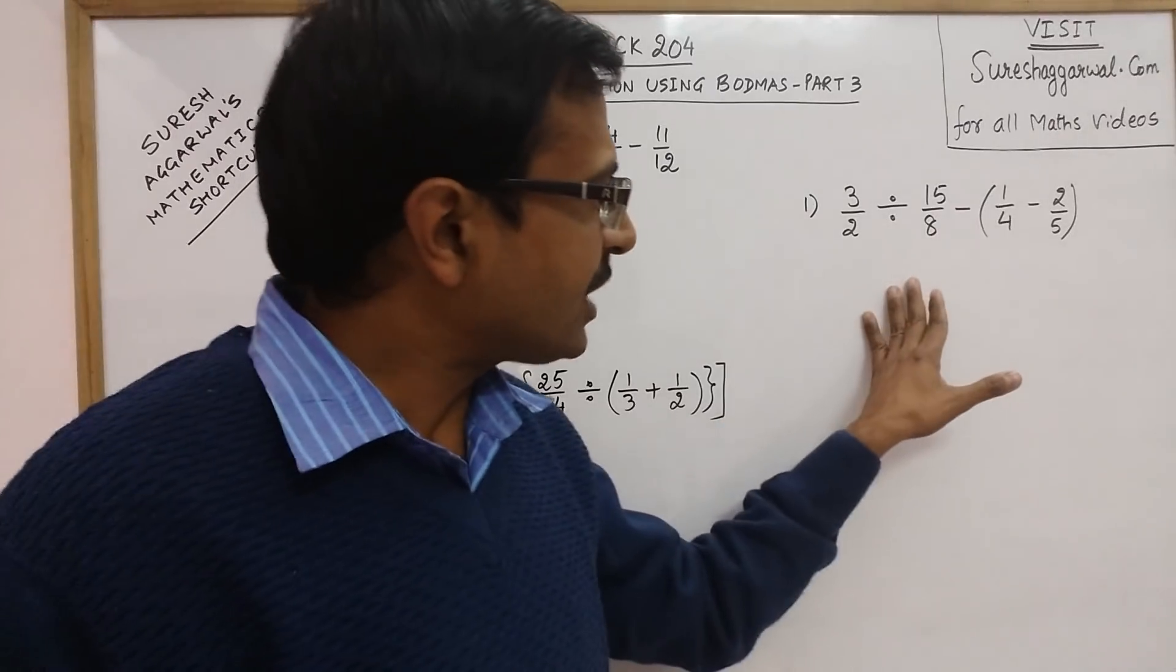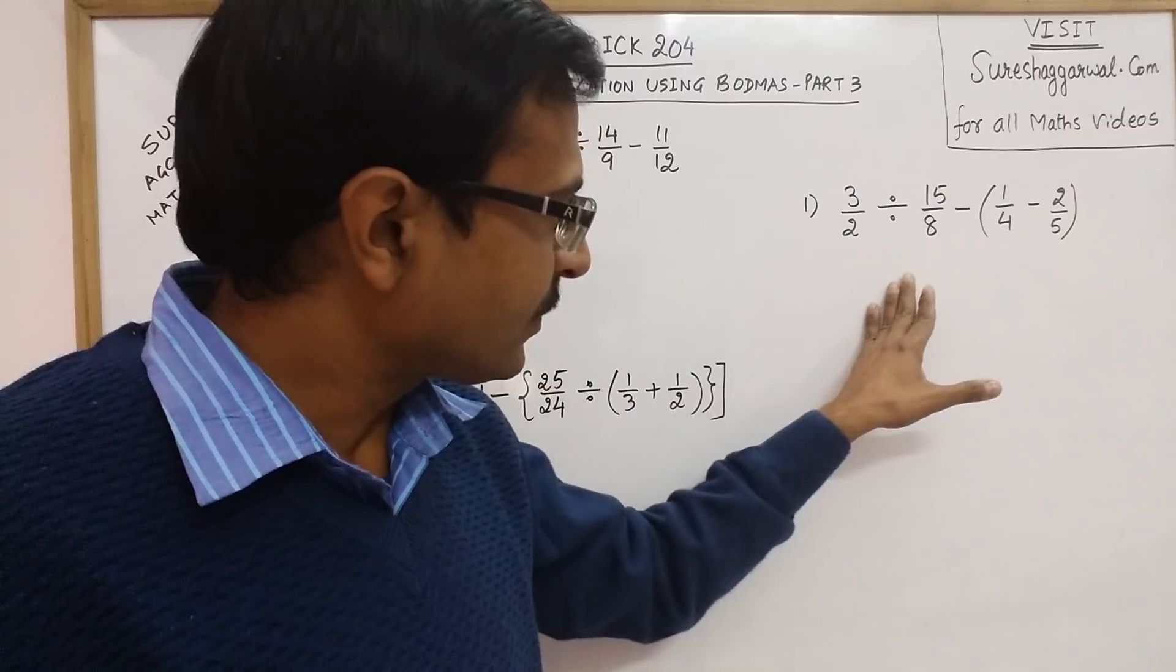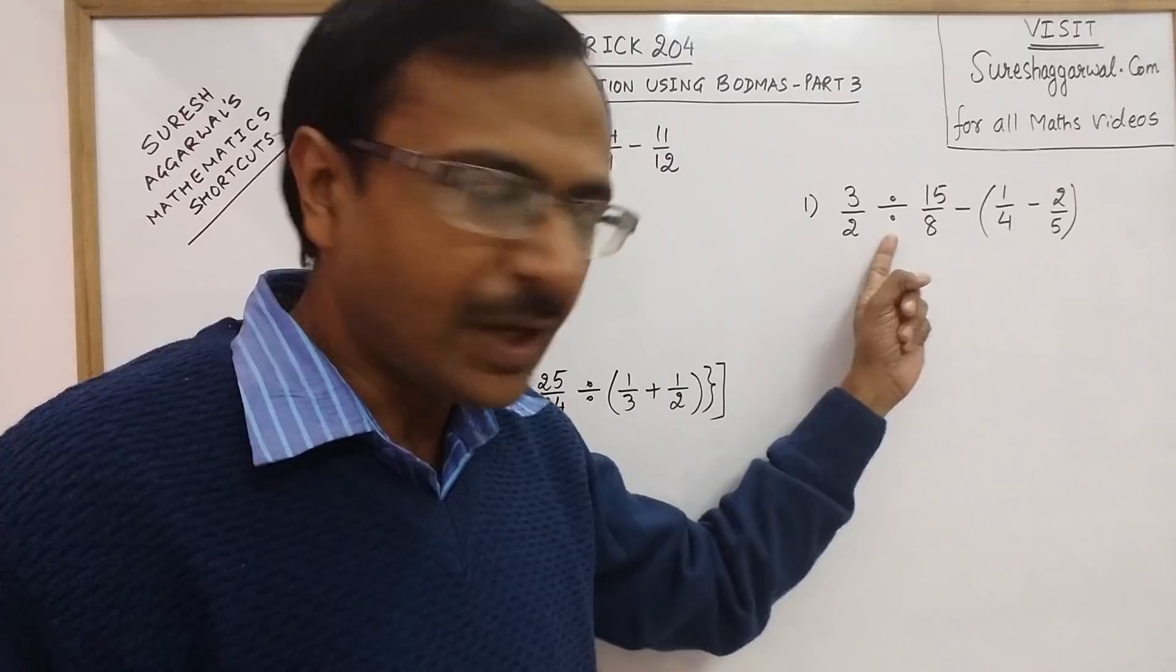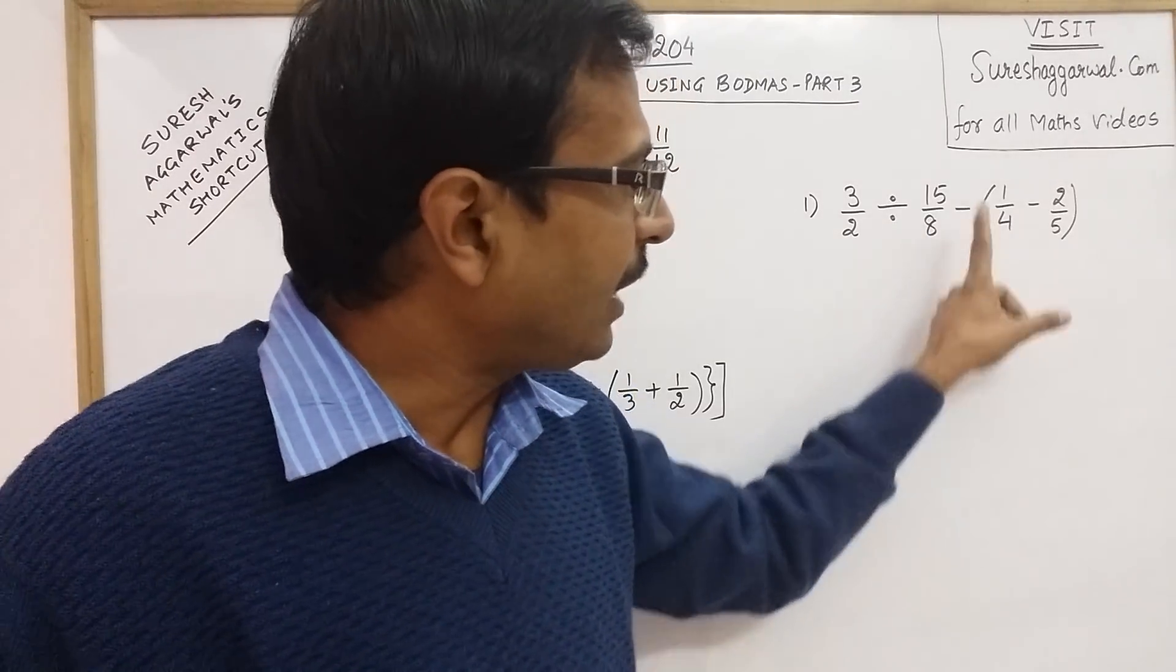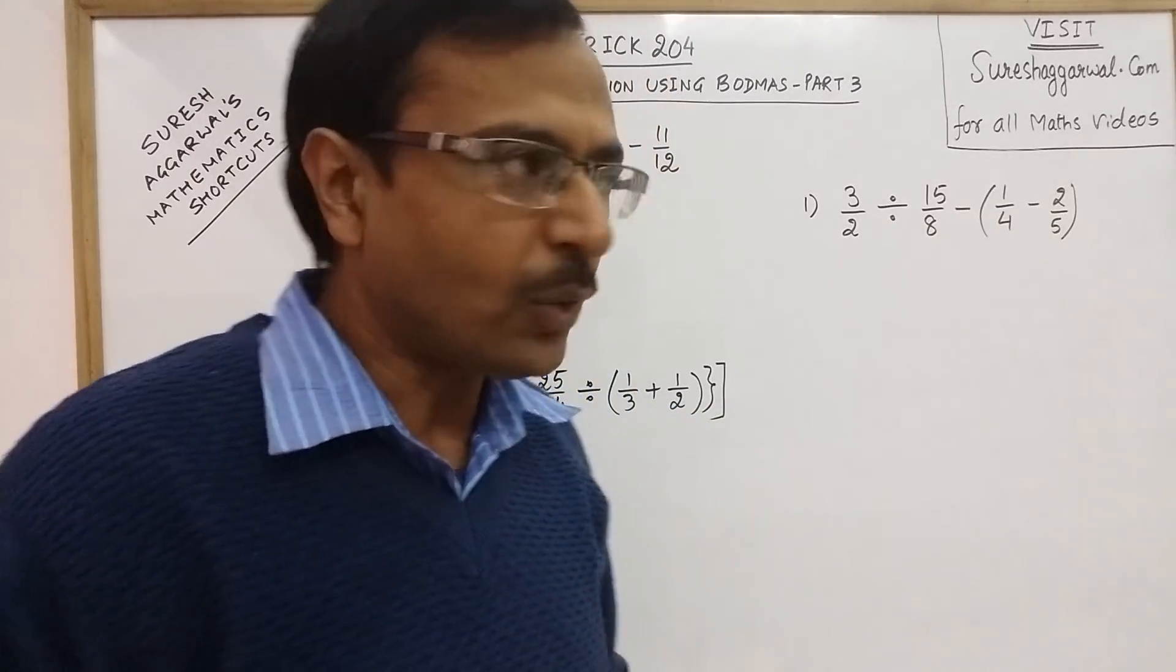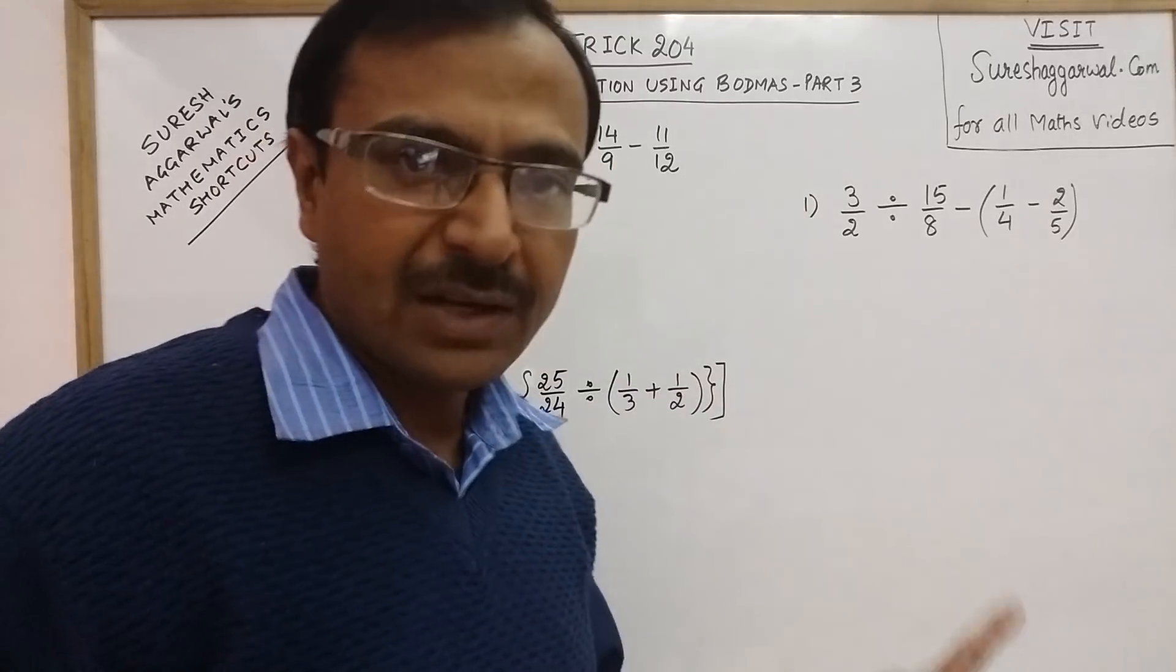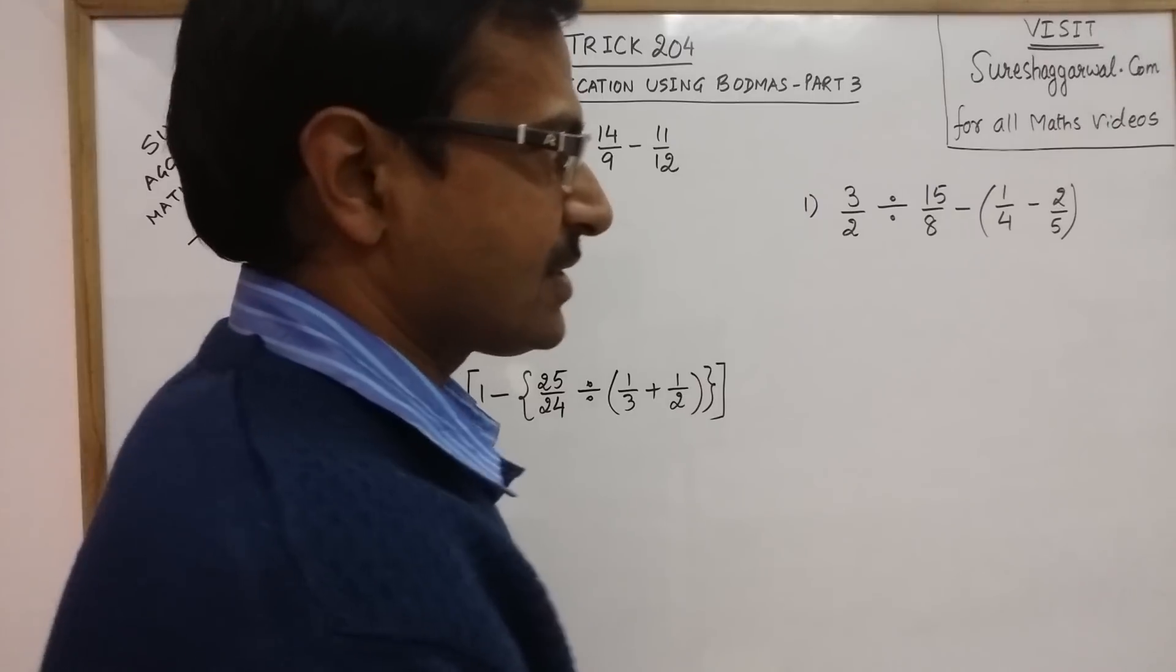The first problem which I am taking is this. It involves only two operations and one bracket. Here we have divide, two negative signs, and one bracket. According to BODMAS, we have to deal with the bracket first. So let us solve the bracket first.